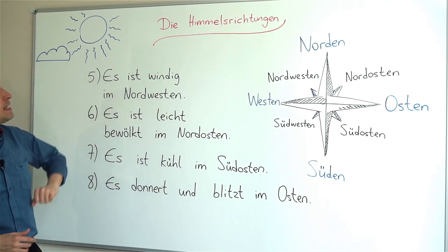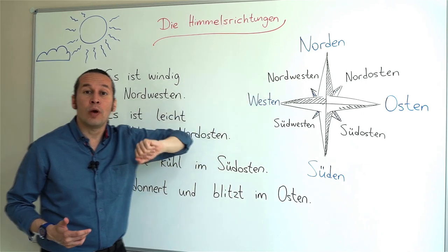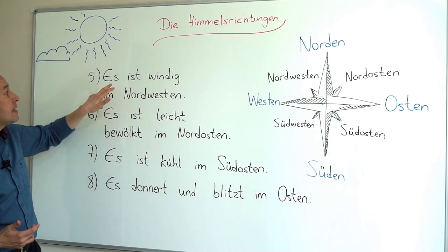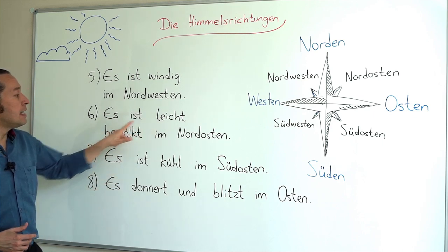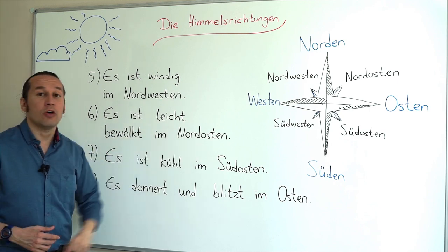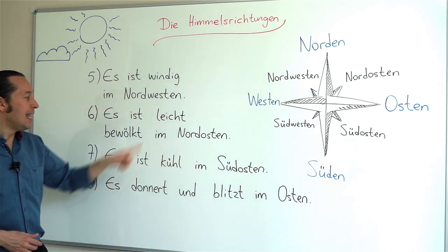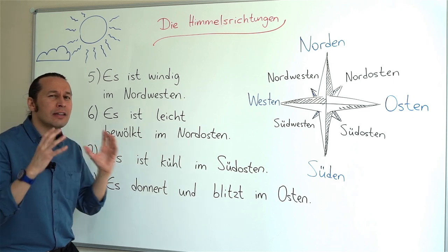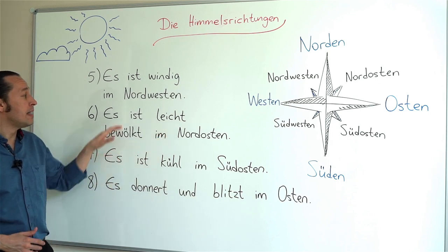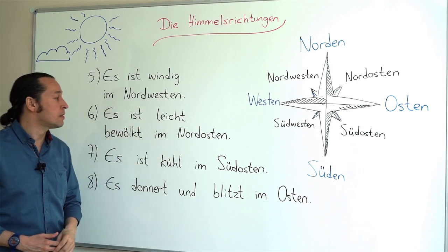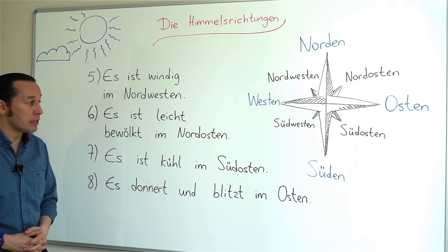'Es ist windig im Nordwesten' — 'windig' stands for windy, in the northwest region. 'Es ist leicht bewölkt im Nordosten' — in the northeast region, 'leicht bewölkt,' there is not too much cloud, a light cloud. So it is slightly cloudy in the northeast: 'Es ist leicht bewölkt im Nordosten.'